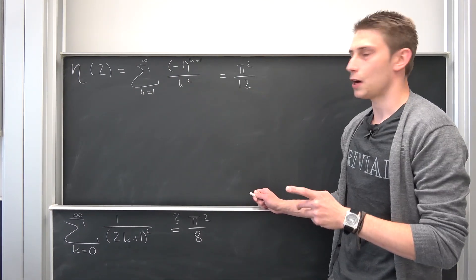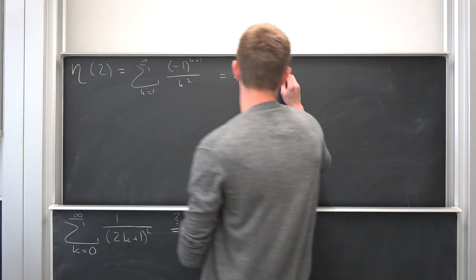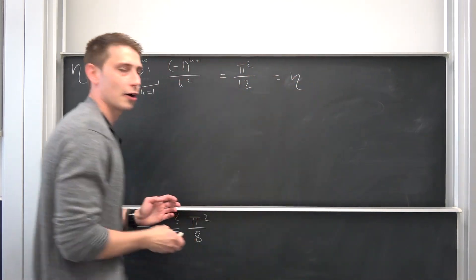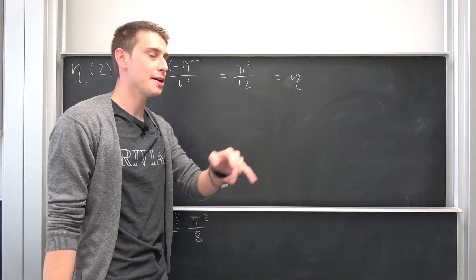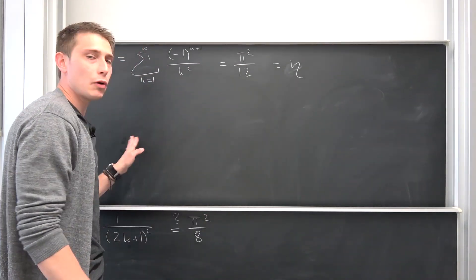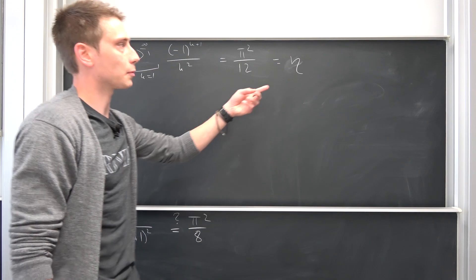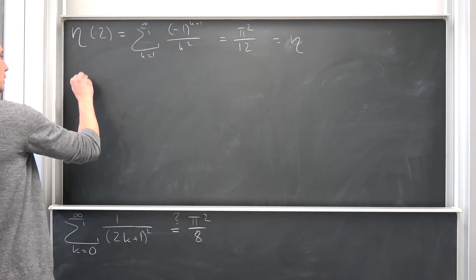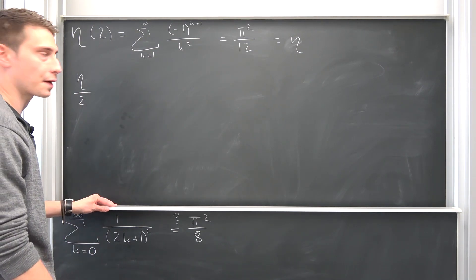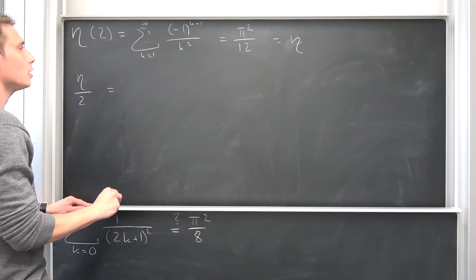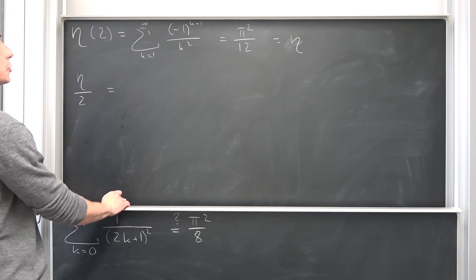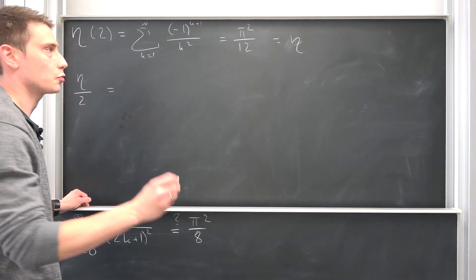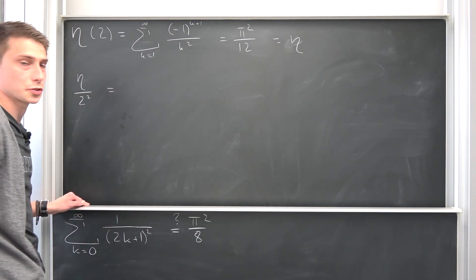Why is this useful? I'm just going to call this thing right here eta. And now I would just like to multiply this thing right here by a few factors. Why not take a look at eta over 2? Let me think, is this any good? I don't know. Eta over 2 squared. Let's take a look at eta over 2 squared.